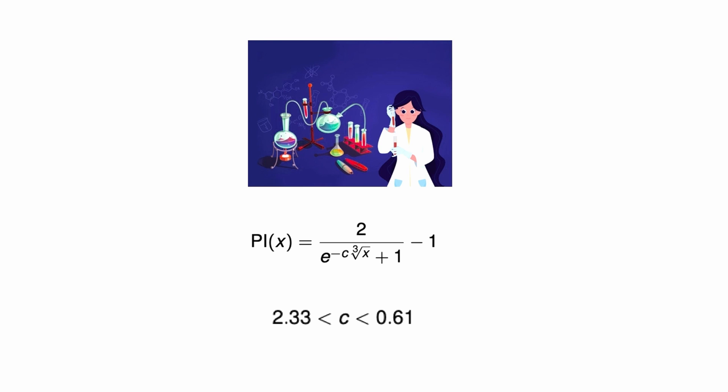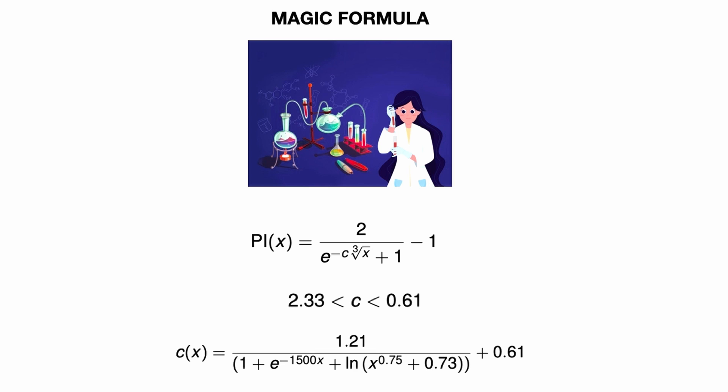I believe this constant c is used by Spotify to tweak the popularity index from time to time, and in general they decrease it. If you're curious, the mathematical definition is that c is dependent on x as the inverse of the logarithm, so it decreases very, very slowly.